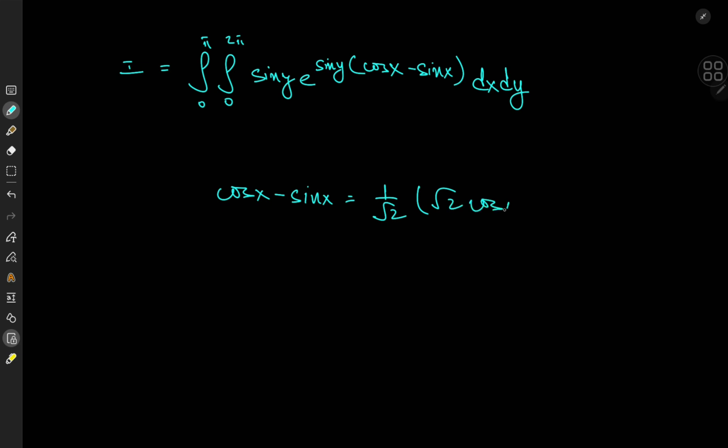So we have root 2 cosine x minus root 2 sine of x. Wait, it should be the other way around. So it should be root 2 times 1 over root 2 cosine and then 1 over root 2 sine.